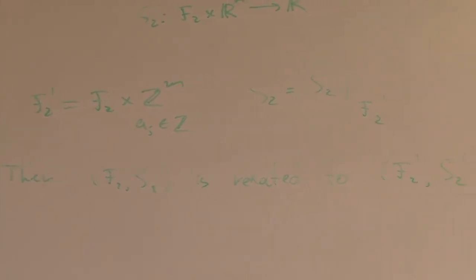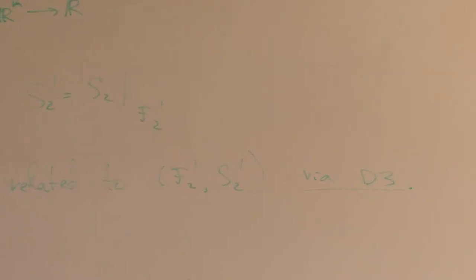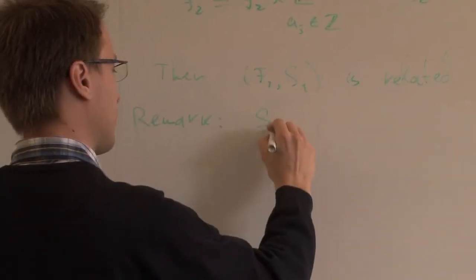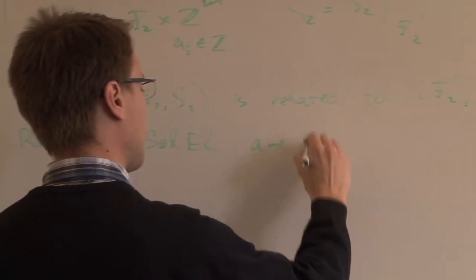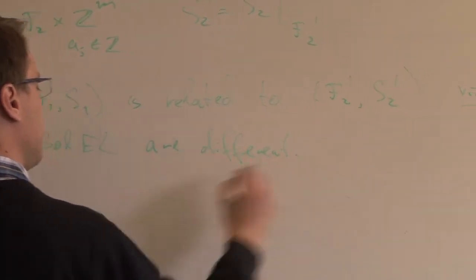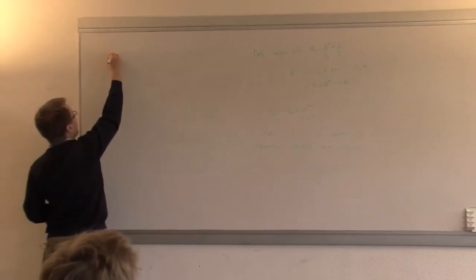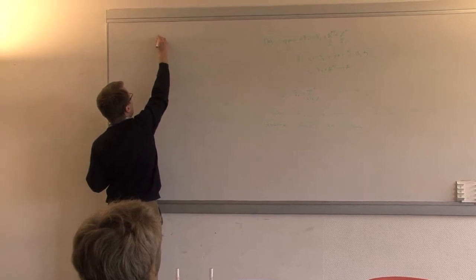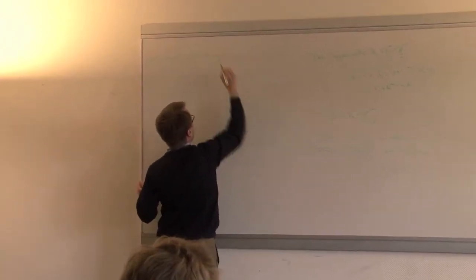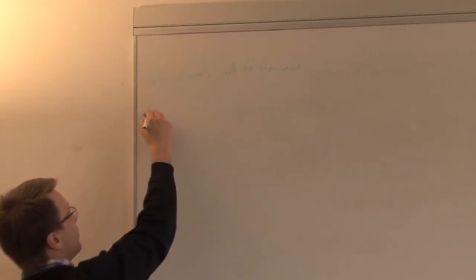This is more intricate because the spaces of classical solutions of the two theories are not the same. But I still claim that the path integrals in the two theories will be the same. It's related to the Poisson summation formula.